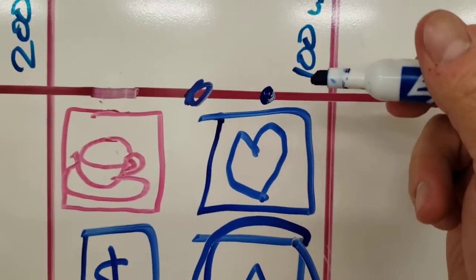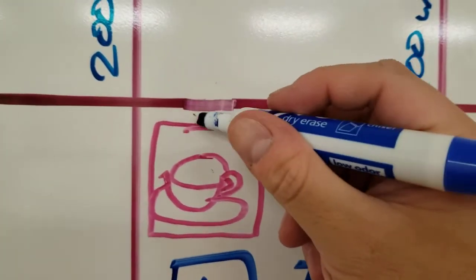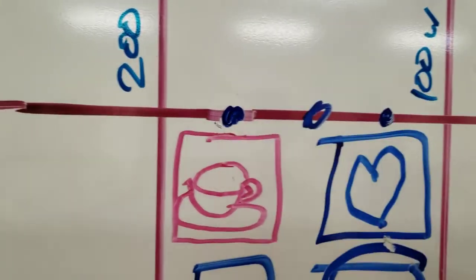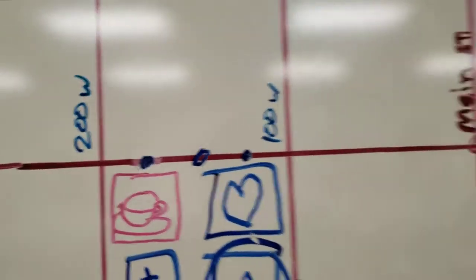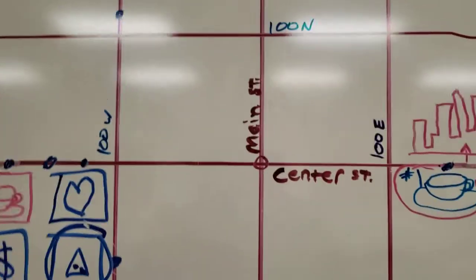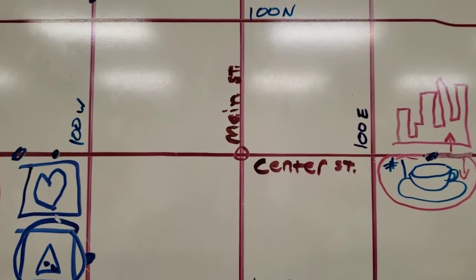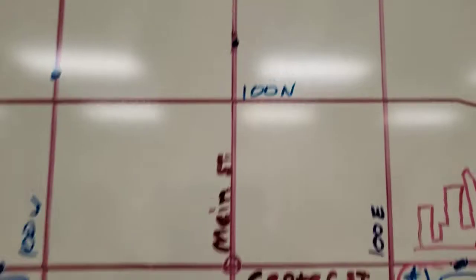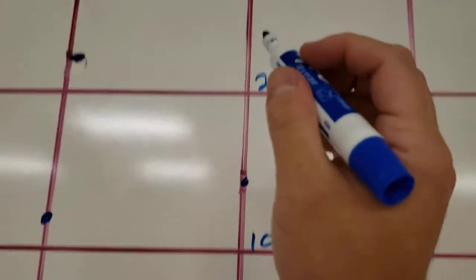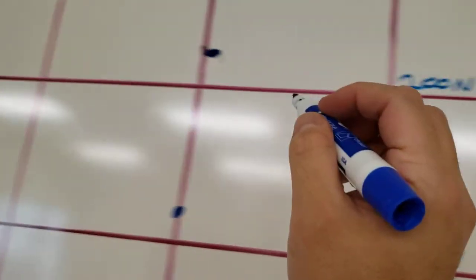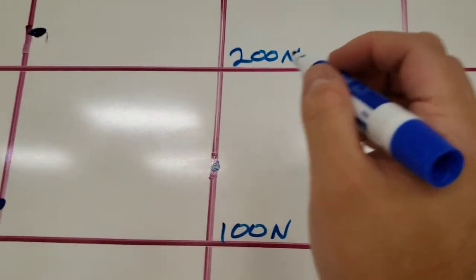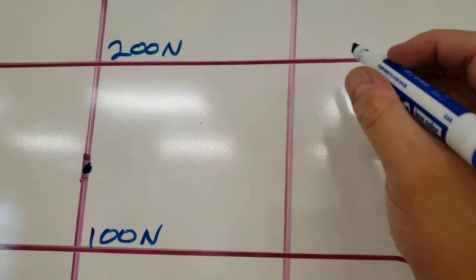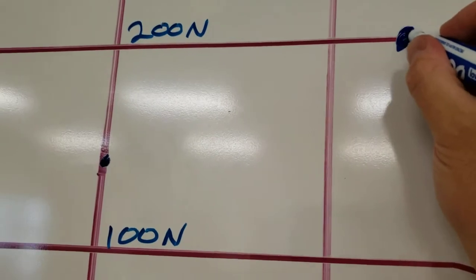If it were to say to go 175 West, well, then that would be right here. If it said to go to 125 East, 200 North, well, we're going to find 200 North and know that we're on this road. And then we'd go 125 East.